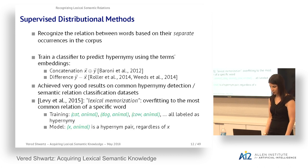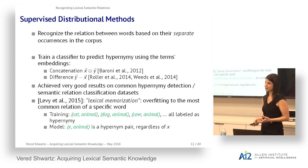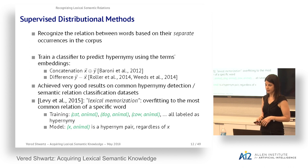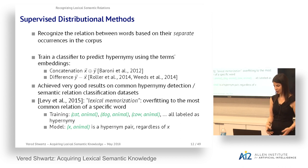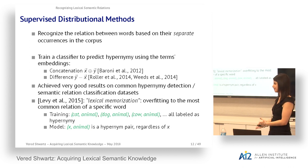However, Levy et al. pointed out a problem they called lexical memorization — a kind of overfitting where models learn to memorize specific words in the relation rather than the relation between two words. For example, if the training set contains many examples like cat-animal, dog-animal, cow-animal all labeled as hypernymy, the model learns that any word x paired with 'animal' is a hypernymy pair regardless of x's actual relation to animal. Most datasets have similar training and test distributions, so this issue goes undetected.